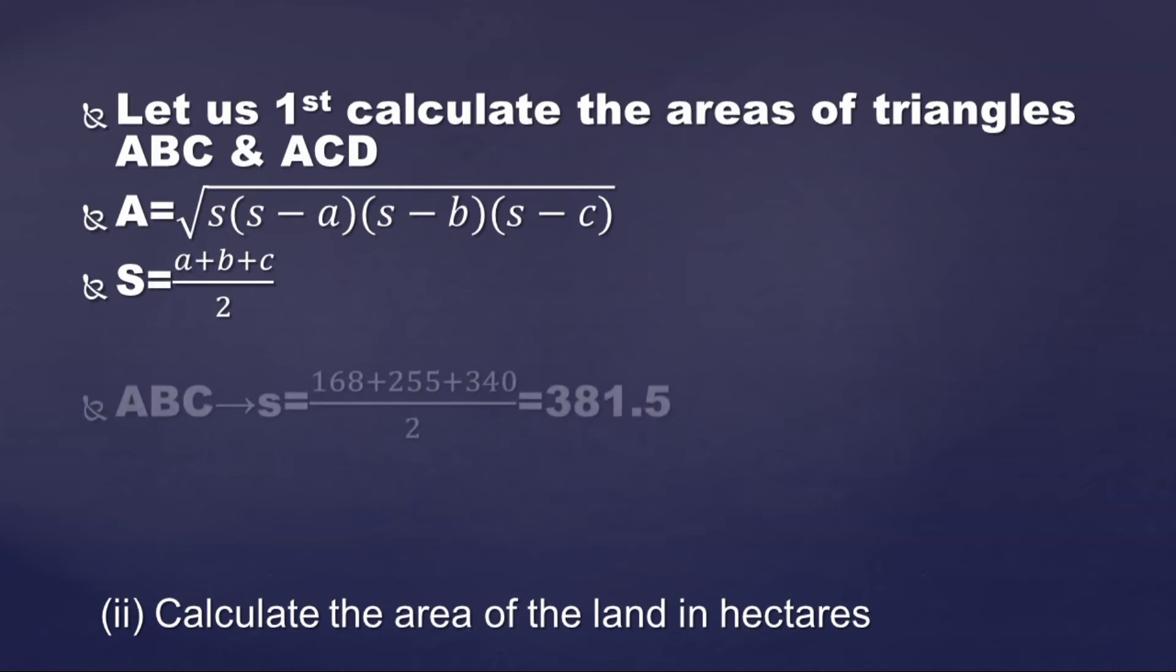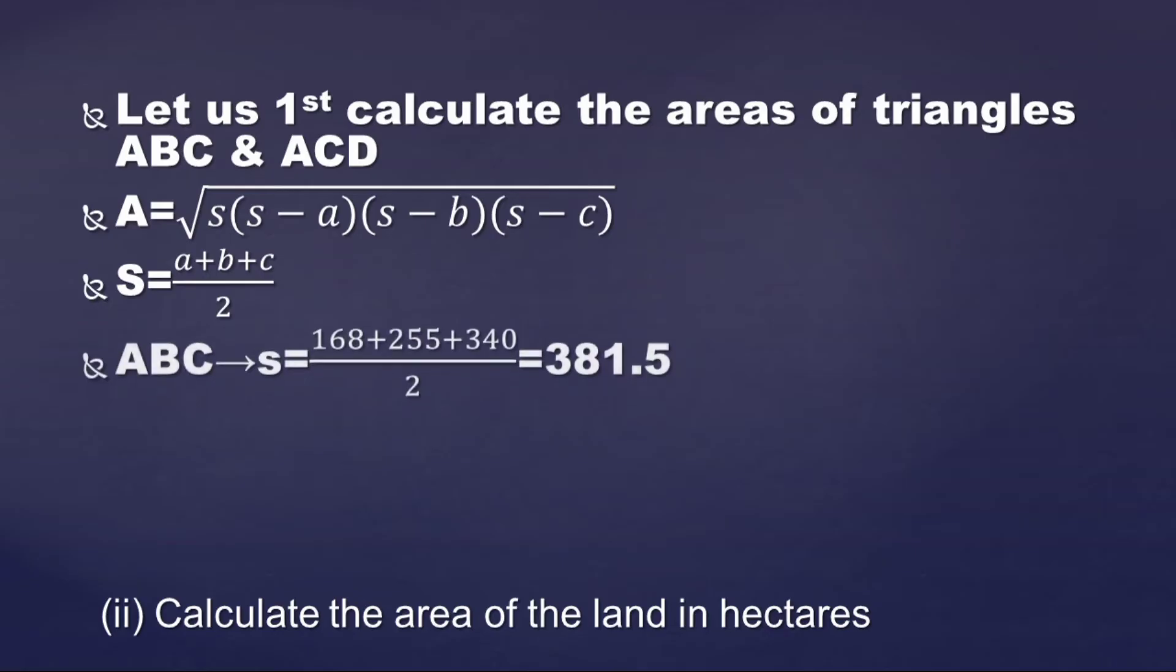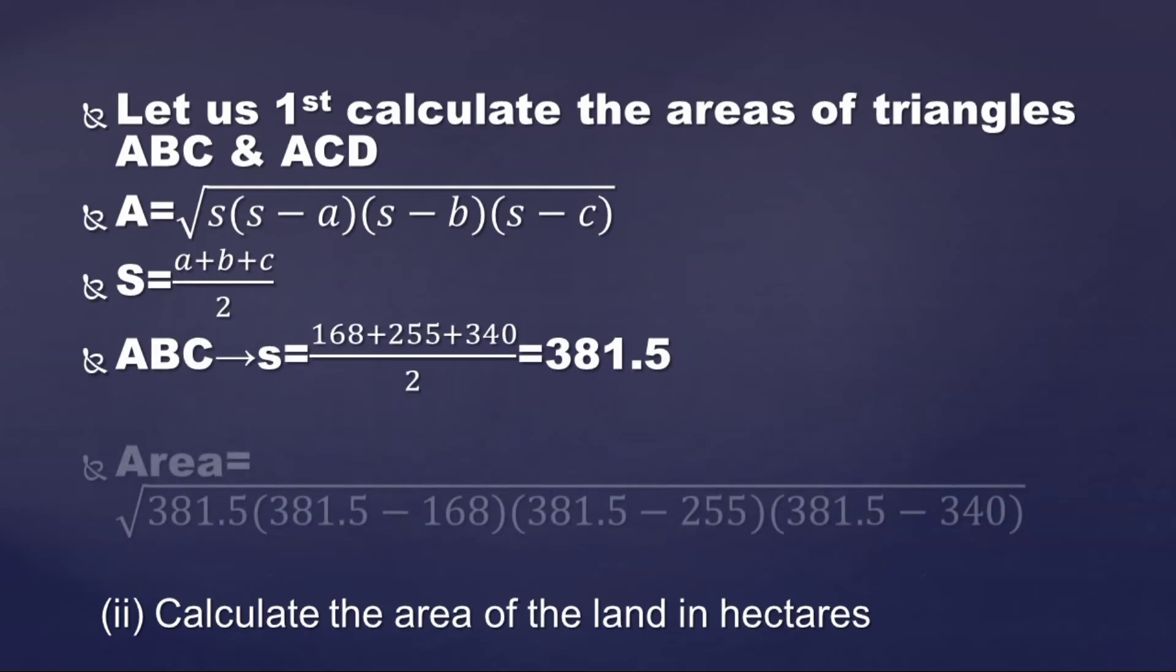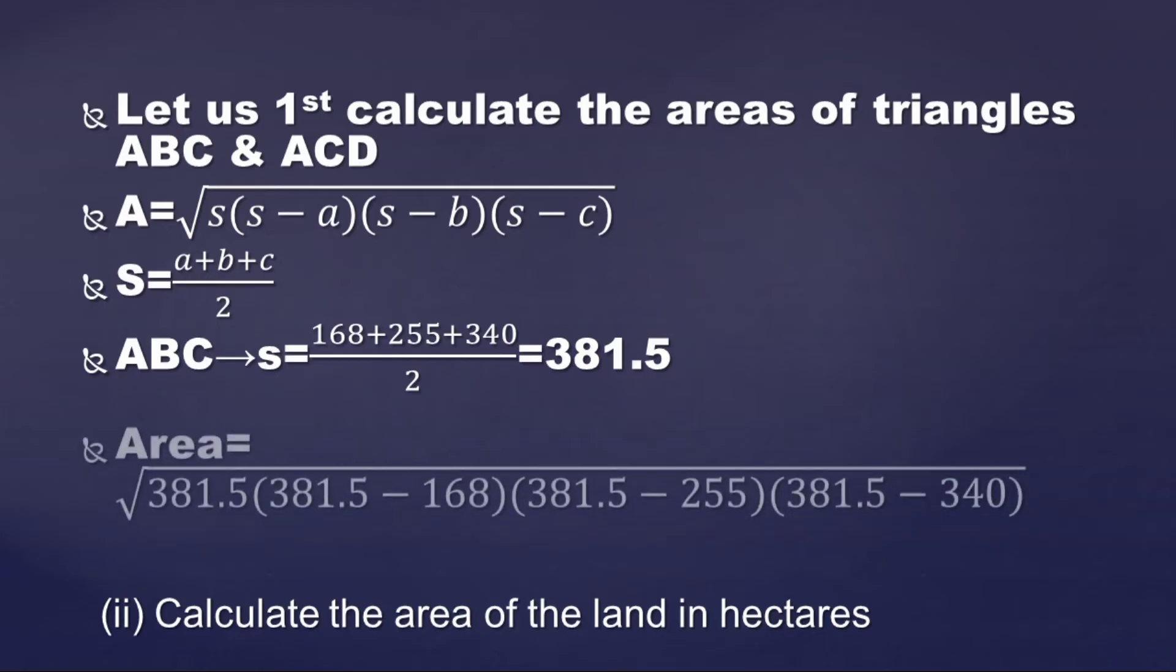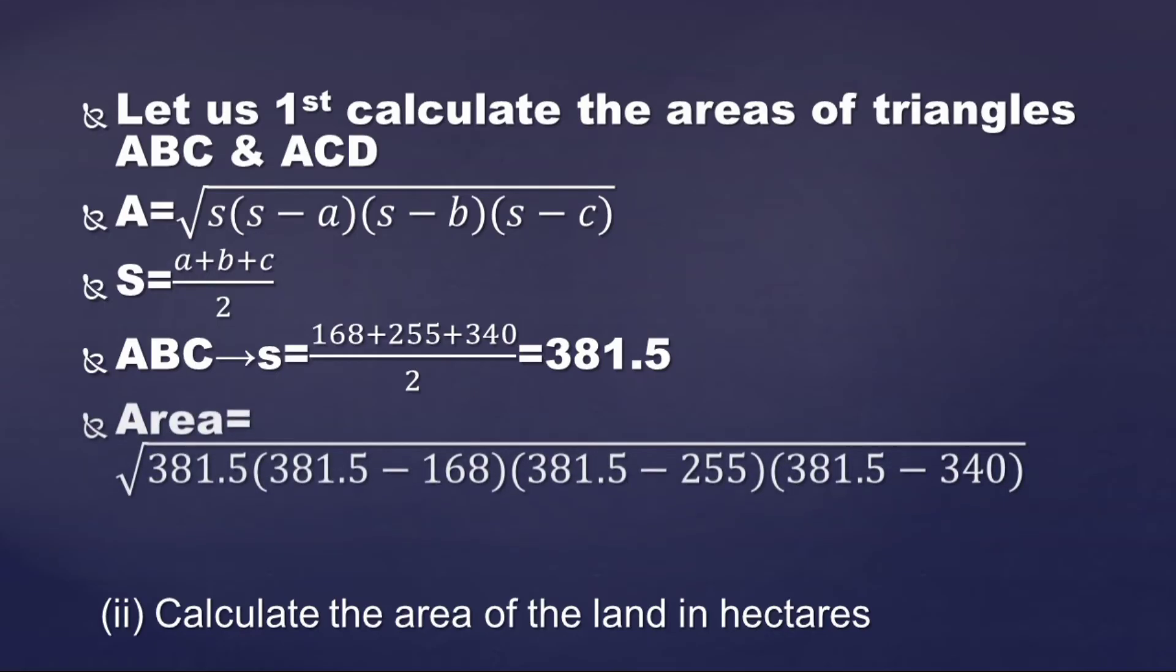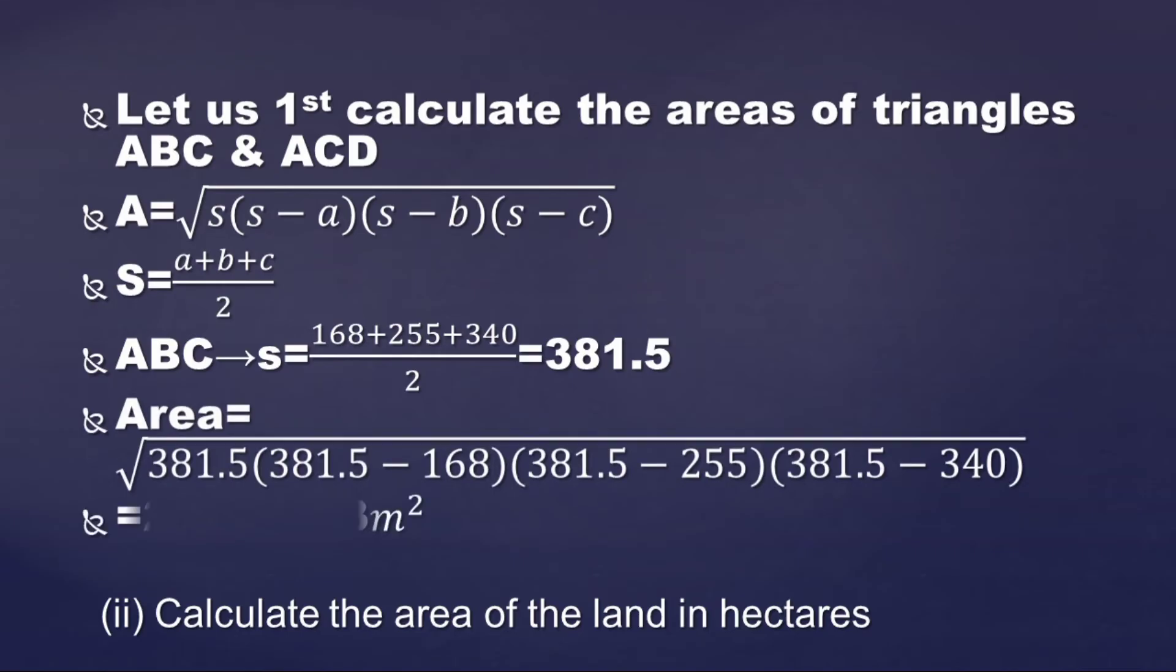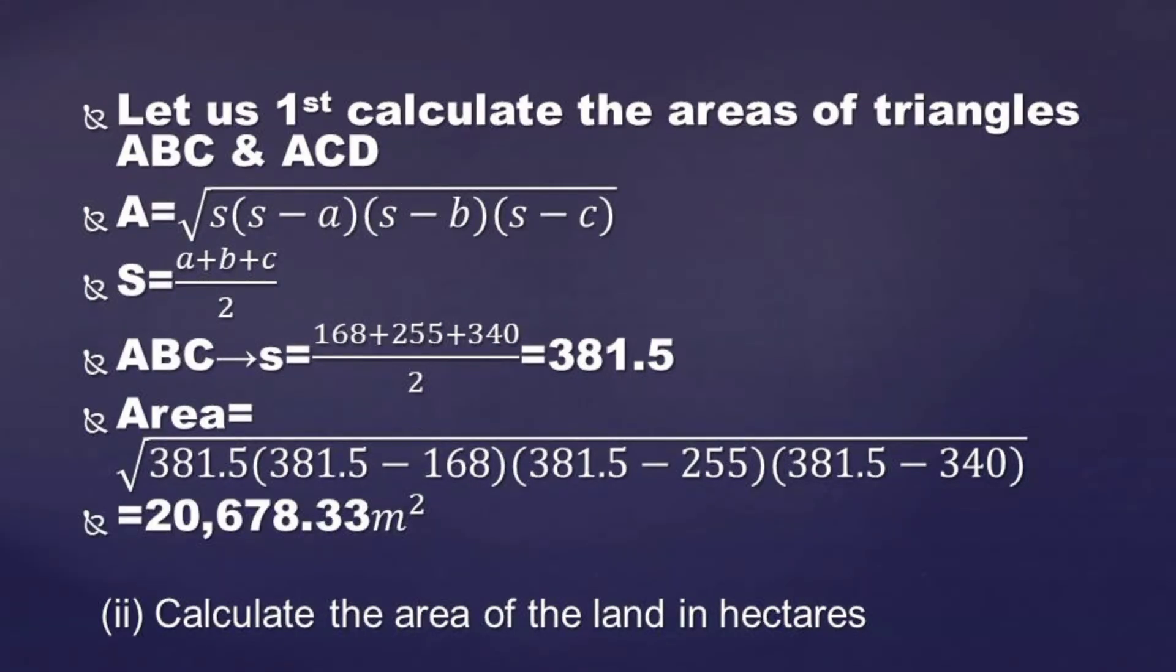So let's go to our question. In our question, let us first calculate the area of the triangles ABC and ACD. The areas of the triangles are given by a formula. So the formula goes by: Area equals the square root of s times (s minus a) times (s minus b) times (s minus c). ABC, those are the lengths of the sides given to us on the equation there. And s will be half the perimeter, so that will be (a + b + c) divided by 2.